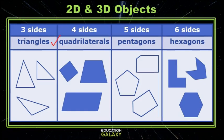Polygons with three sides are called triangles. Polygons with four sides are called quadrilaterals. Polygons with five sides are called pentagons and polygons with six sides are called hexagons.